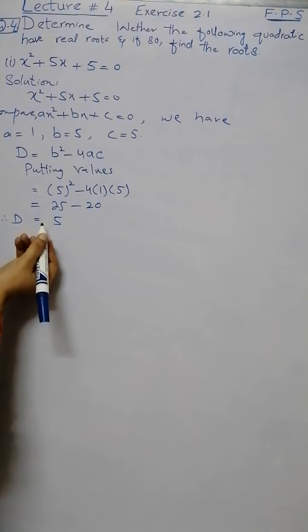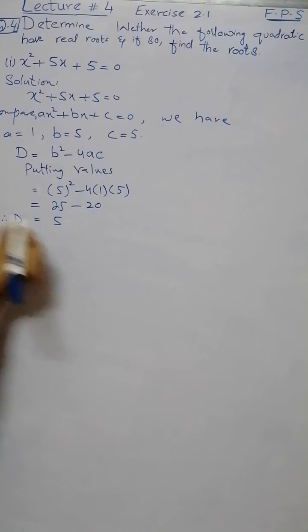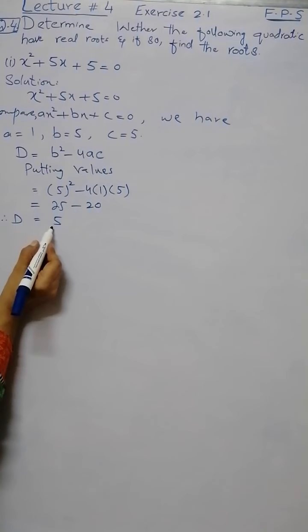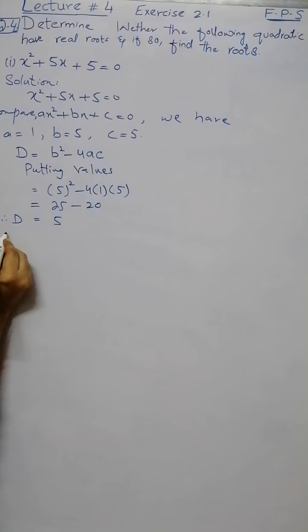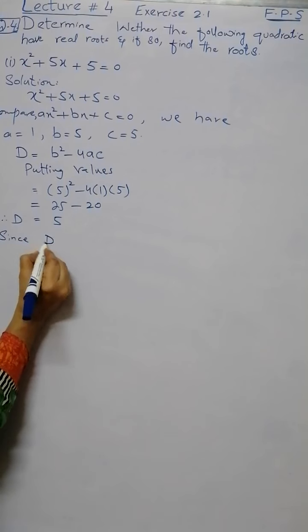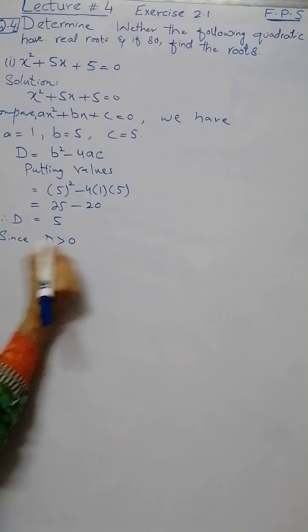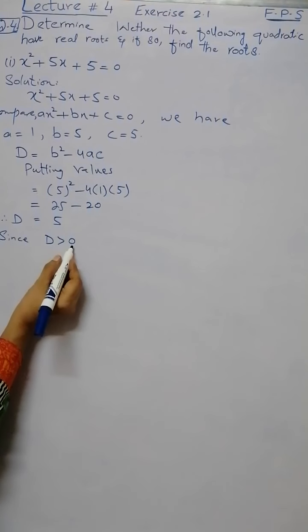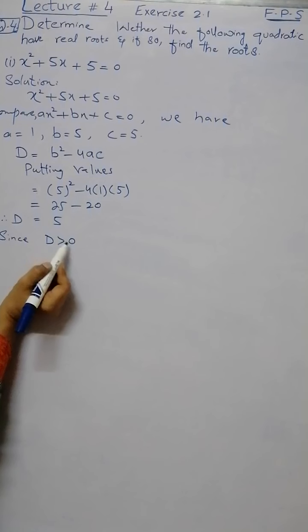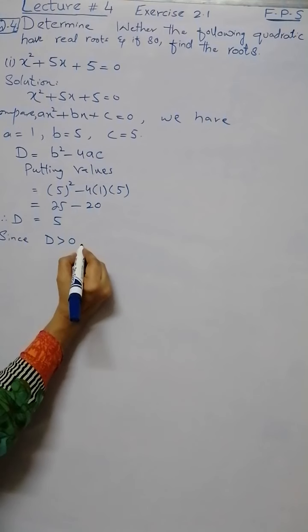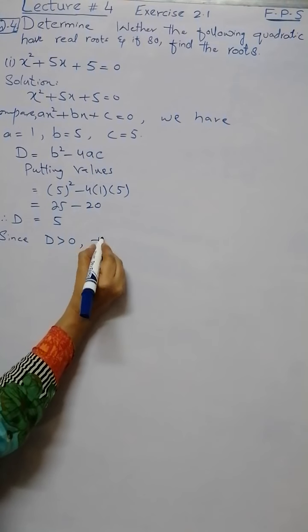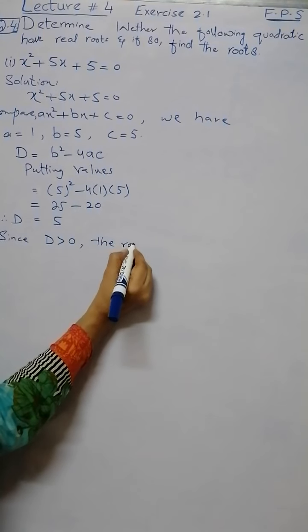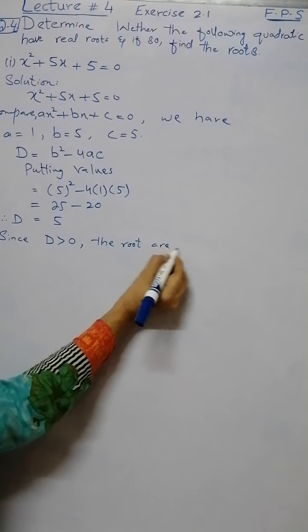As we observe, the discriminant is positive. If it is positive and greater than 0, that means that the roots are real. Since discriminant is positive, the roots are real.